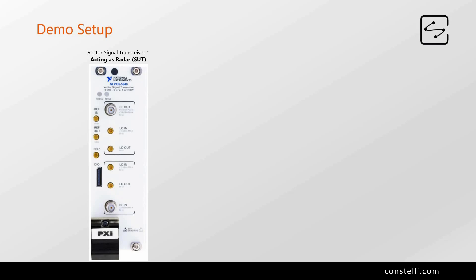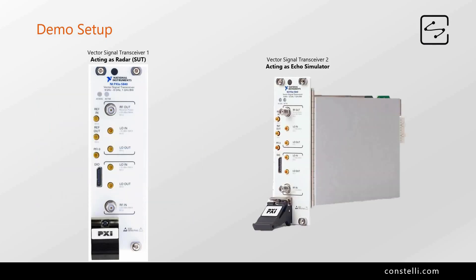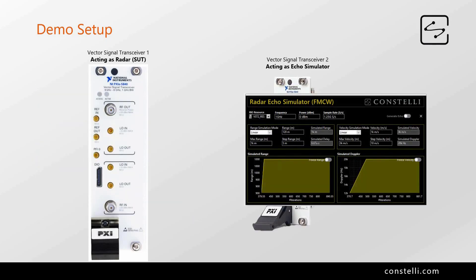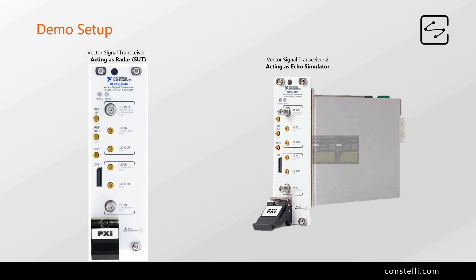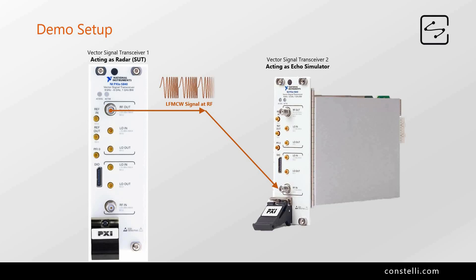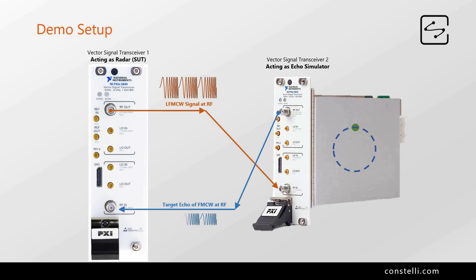Of the two VSTs, we are using one as a radar and another as an echo simulator. VST1, acting as the radar, can generate the FMCW signal with a bandwidth of up to 1 GHz at center frequencies of up to 6 GHz. The signal is fed to VST2, which acts as the echo simulator. VST2 down converts the signal, processes it with user-defined echo parameters, and sends it back to the radar.